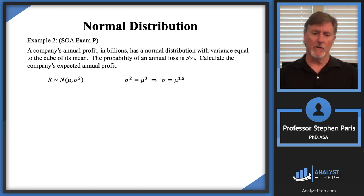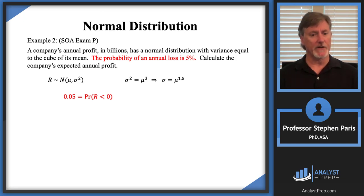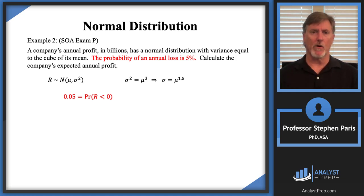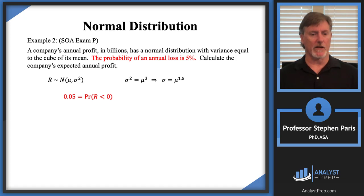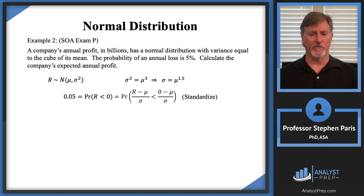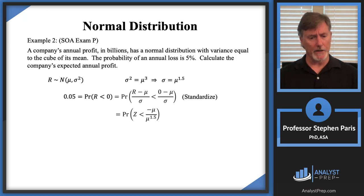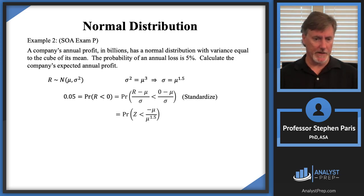A loss occurs when profit is less than zero, so P(R < 0) = 0.05. To standardize, subtract the mean and divide by the standard deviation: P(Z < (0 − μ)/σ) = 0.05. Substituting σ = μ^1.5, I get P(Z < −μ/μ^1.5) = P(Z < −1/μ^0.5) = 0.05. Using properties of exponents, the mu in the numerator cancels with one of the 1.5 mus in the denominator, leaving −1/√μ on the right-hand side.